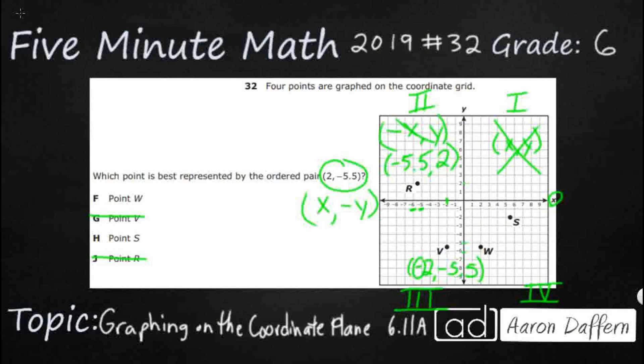Obviously quadrant 3 is both negative x and y. So it's down here in quadrant 4 that we finally get what we need, a positive x, negative y. That's what we need.